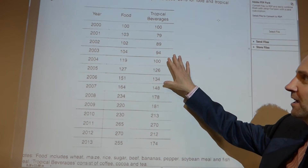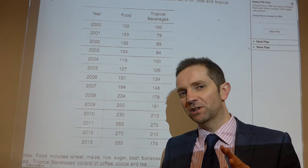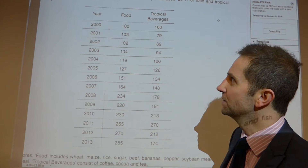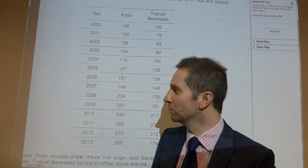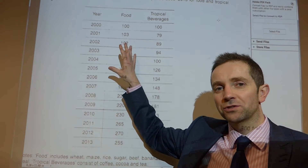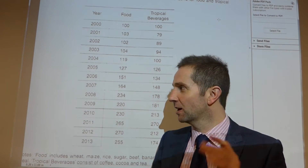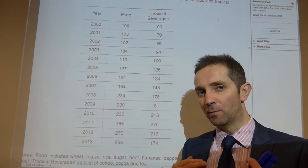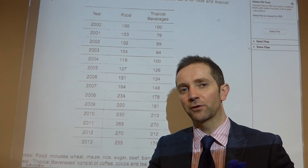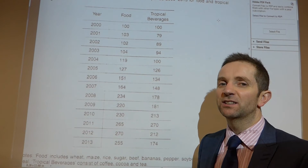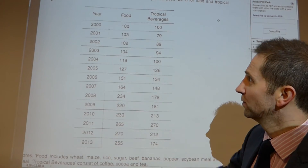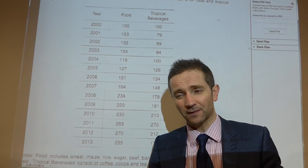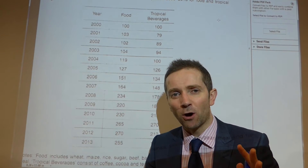The data behind me is taken from a very recent OCR paper — the International Board paper done maybe two months ago — which I've been using for practice with my own students. One of the questions presents this set of data and for four marks the candidates are asked to compare the data. In many instances what my students have done — and probably what might be your first instinct — is they have simply described the data set for food from 2000 to 2013 and then for tropical beverages from 2000 to 2013. But that does not get you any marks whatsoever.